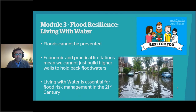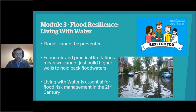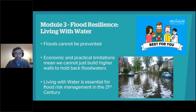Module three, run by myself, is Flood Resilience: Living with Water. Ultimately it focuses on the idea that flooding cannot always be prevented — we cannot stop every flood. In some circumstances, from extreme weather events, we won't be able to stop it. We need to accept that some flooding will happen, and this module looks at how we can reduce the consequences of flooding. This also ties into the economic and practical limitations behind some of our flood defences, which means we need to live with water and be ready in case flooding happens anyway.